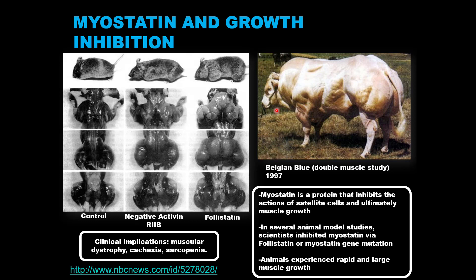This breed of cattle, dubbed Belgian Blue, is unusually muscular. In what is dubbed the double muscle study, researchers found that this breed of cattle is deficient in myostatin. If myostatin is absent, there is no inhibitor of satellite cell activity. You can imagine satellite cells of their muscles uncontrollably being active, leading to a very large capacity for muscle hypertrophy even in the absence of resistance training or mechanical stress.